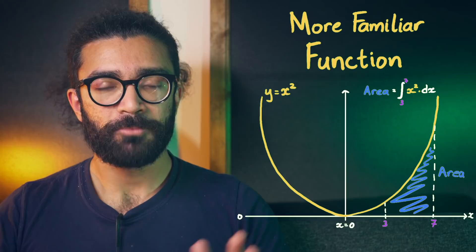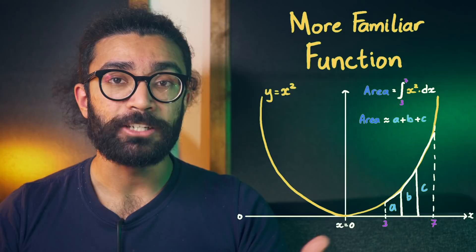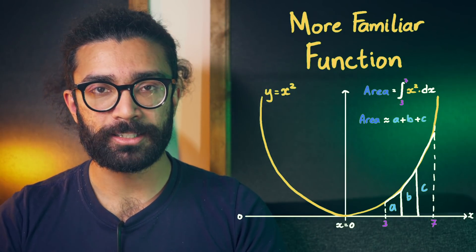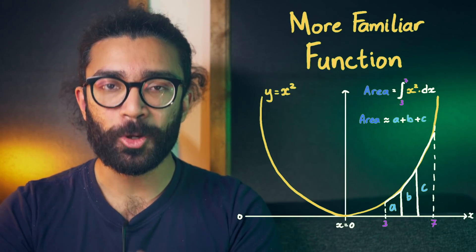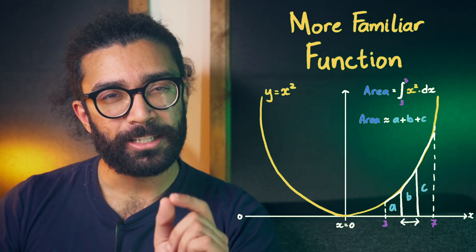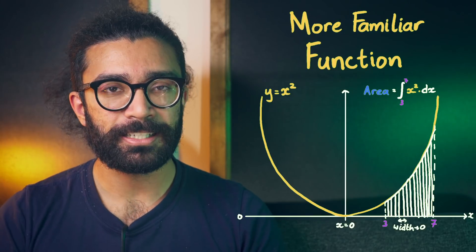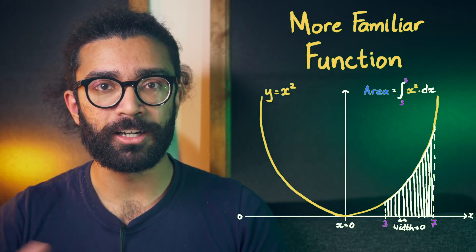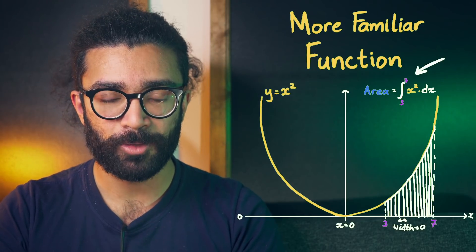However, we can imagine splitting this area up into lots of small chunks, finding the area of each one of them by treating it as a rectangle or trapezium, and then adding them all up to give the total area that we're looking at. When we make the width of each little chunk of area as small as being almost zero, this calculated area then matches the true area under the curve, and this is what we mean by taking the integral of the function.